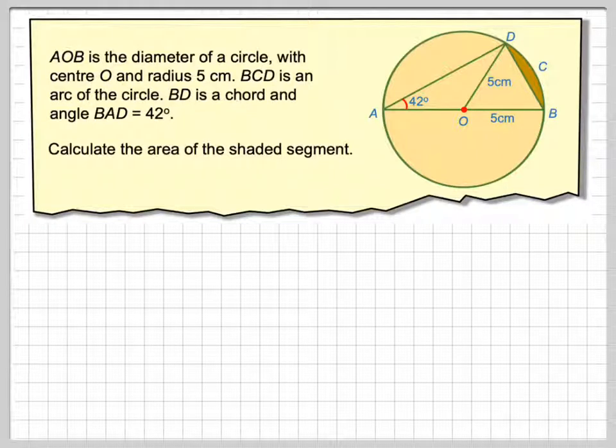In order to find the area of the shaded segment, we need to know the radius of the circle, which we have, but we also will need to find this angle here.